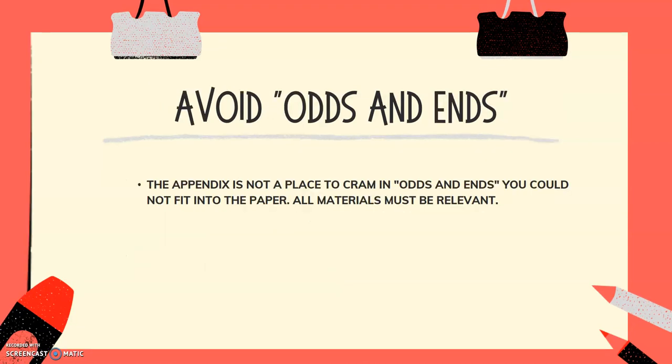One last big tip from us: avoid odds and ends. The appendix is not a place to cram in odds and ends that you couldn't fit into the paper. All the materials need to be relevant. And what we mean by this is, if you've got a source that you really like but it doesn't really help your argument or explain how your project connects to the theme, it probably doesn't need to go in your appendix.